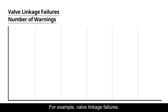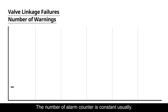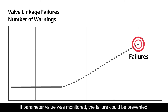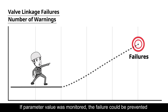For example, valve linkage failures. The number of alarms is constant usually. Then, three days before failure, the alarm count starts to surge, like this. If the parameter value is monitored, the failure could be prevented by detecting when the alarm count began to rise.